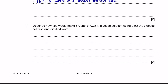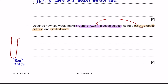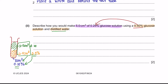Part 2: Describe how you would make 5 cm³ of 0.25% glucose solution using a 0.5% glucose solution and distilled water. We are trying to reduce the glucose concentration by half. Fill the test tube with 2.5 cm³ of the 0.5% glucose solution and then fill up the other half with 2.5 cm³ of distilled water. This reduces the concentration by half to 0.25% and the total volume makes up 5 cm³.